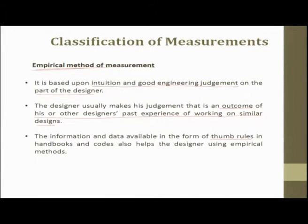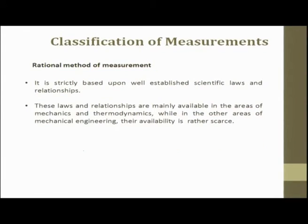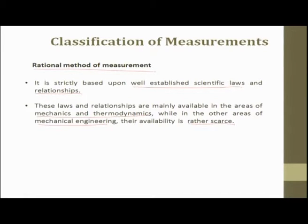Empirical method is based on intuition and good engineering judgment on the part of the designer. The designer usually makes a judgment that is an outcome of past experience on a similar design. Information and data available in the form of thumb rules in handbooks and codes helps the designer use the empirical method to manufacture devices for measurement. Rational method, on the other hand, is strictly based on well-established scientific laws and relationships, mainly available in the areas of mechanism and thermodynamics.